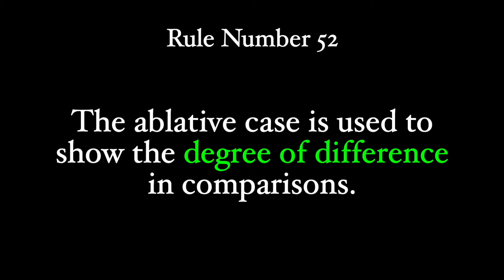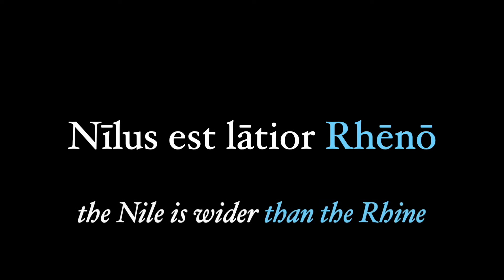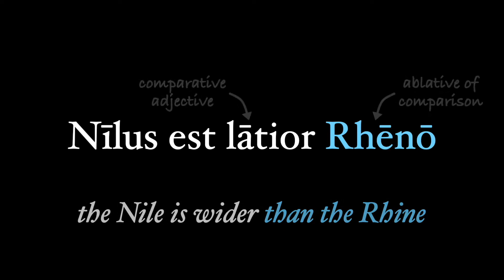Rule number 52: the ablative case is used to show the degree of difference in comparisons. In rule number 45, we talked about how the ablative case is used with comparative adjectives to show what we're comparing. In this rule, we're going to look at a different use of the ablative case with comparisons — the ablative of degree of difference.